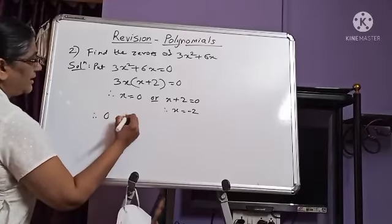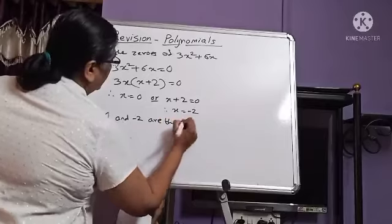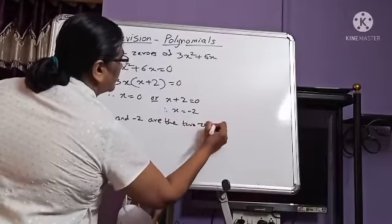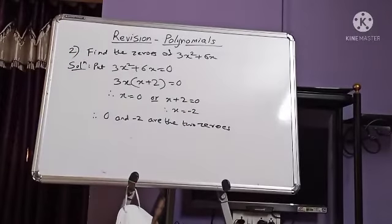Therefore, 0 and minus 2 are the two zeros of the polynomial.